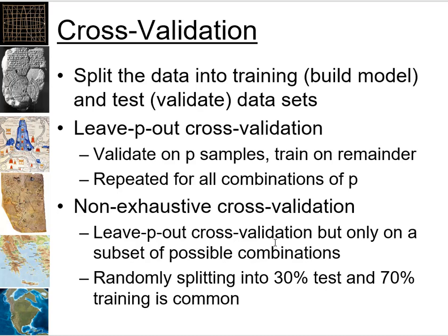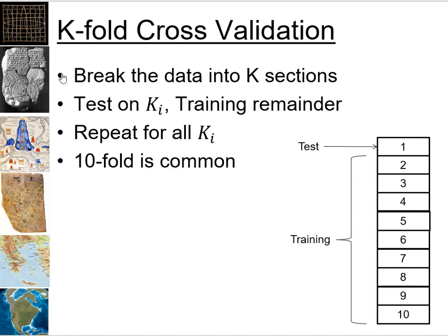Non-exhaustive cross-validation — typically a 70/30 training/test split — is by far the most common. A method that used to be more common is k-fold cross-validation, where you break the data into k sections, typically 10. You train on nine sections and test on one, then rotate through all sections. For example, with 100 points, you'd randomly distribute them into 10 buckets and cycle through each as the test set. It's exhaustive, but not used as much anymore as the 70/30 split.